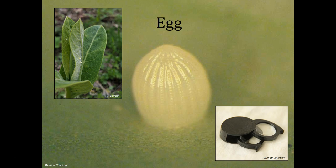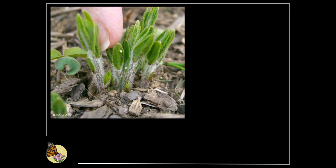Eggs have vertical ridges running from the tip to the base, which you can clearly see on a zoomed-in photo. They take three to five days to hatch, depending on temperature. Cooler temperatures slow down this process, and warmer temperatures speed it up. Eggs can be laid on milkweed as soon as it emerges from the ground — as early as March in the southern U.S., or as late as June in the northern reaches of their range. Eggs are laid singly, not in clusters, so it is most common to find a single egg on a leaf or even a single egg on a plant.